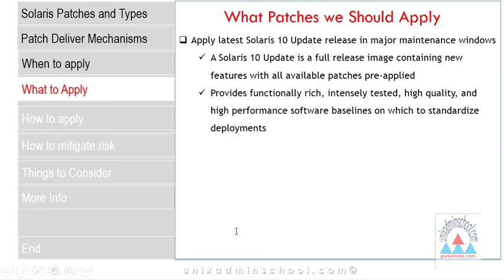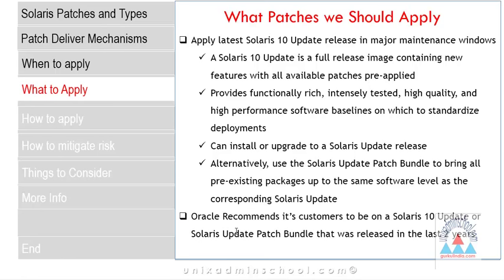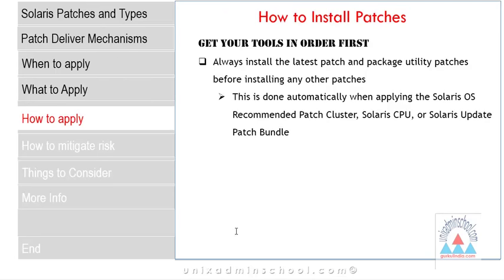The Solaris 10 update provides a functionally rich, intensely tested, high-quality and high-performance software baseline on which to standardize deployments. You can either install or upgrade to the latest Solaris update release. Alternatively, you can use Solaris update patch bundles to bring all pre-existing packages up to the same software level as the corresponding Solaris update. Oracle recommends customers be on a Solaris 10 update or patch bundle released within the last 2 years.